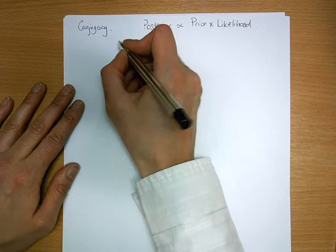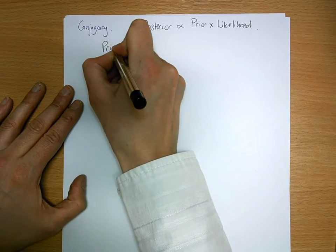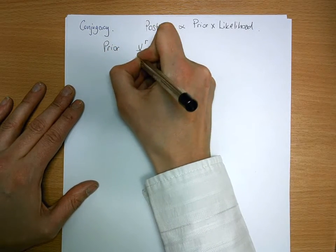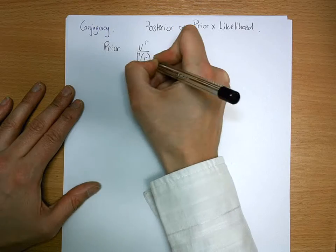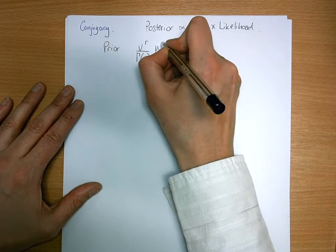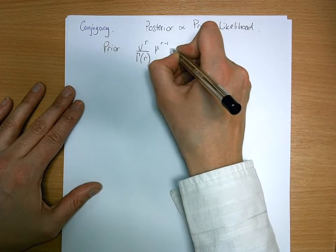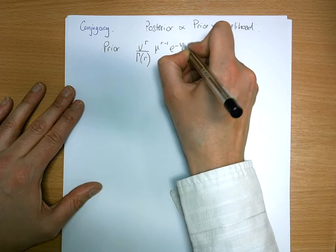We have our prior is v to the r over gamma of r, mu to the r minus 1, e to the minus v mu.